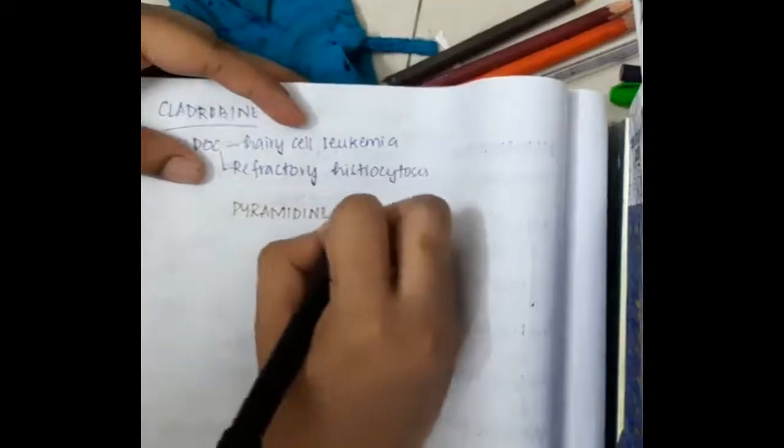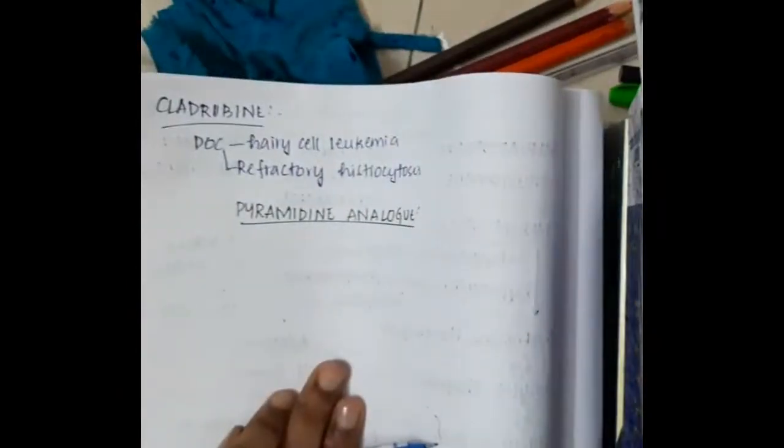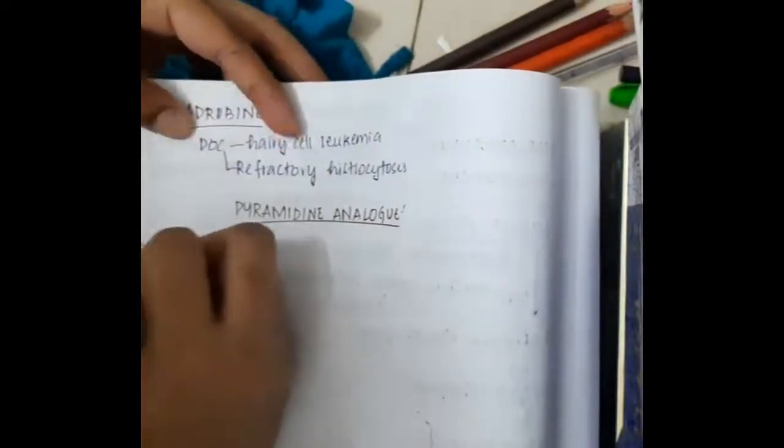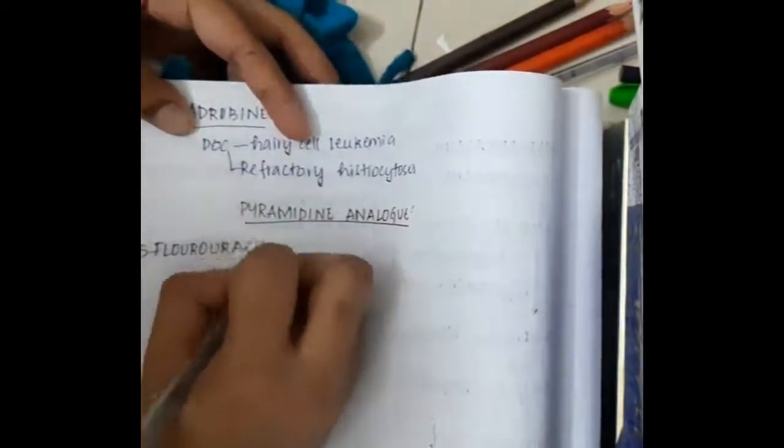Hello friends, let us now learn some important points about Pyrimidine Analogues. The first drug in Pyrimidine Analogues is 5-fluorouracil.